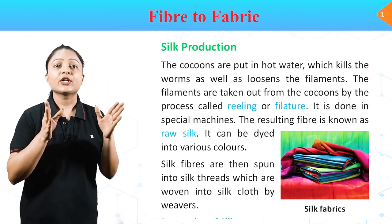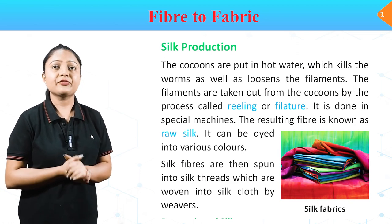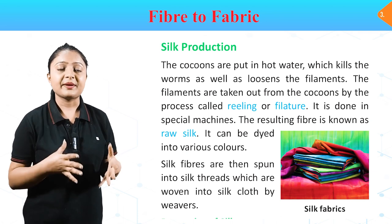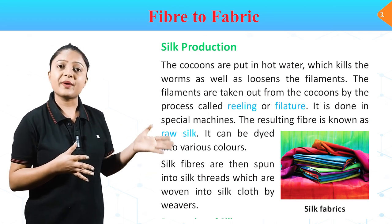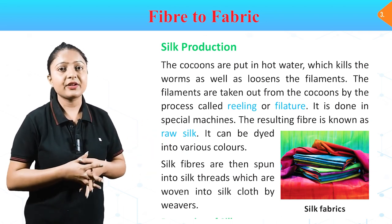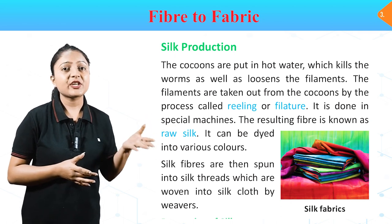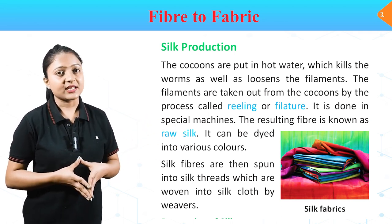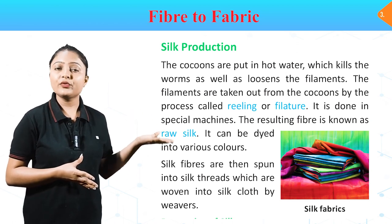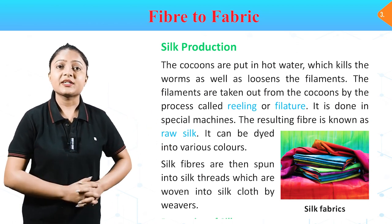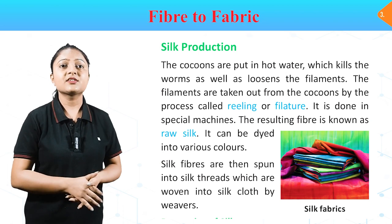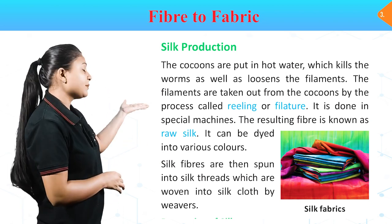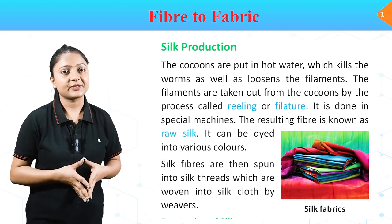Silk Production: the cocoons are put in hot water, which kills the worms and loosens the filaments. The filaments are taken out from the cocoons by a process called reeling and filature, done in special machines. The resulting fiber is known as raw silk. It can be dyed into various colors. Silk fibers are then spun into silk threads which are woven into silk cloth by weavers. In this image you can see silk fabrics.